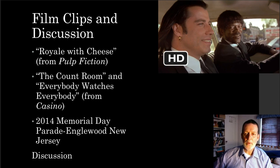We'll begin with a few film clips to suggest various dimensions of U.S. culture. We'll look at a clip from Quentin Tarantino's Pulp Fiction, then a couple of scenes from Martin Scorsese's Casino, and also a clip of a Memorial Day Parade from New Jersey. Parades are filled with ritual and symbolism and tell us a lot about culture. I'll then ask you to discuss these clips and to engage your colleagues.